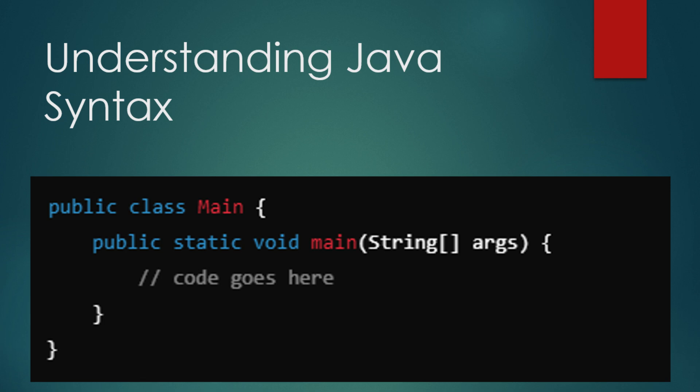In this example, Main is the class name, and within this class, we have the main method. The main method is where every Java program starts executing. It is always written as public static void main(String[] args). The public keyword means the method can be accessed from outside the class. Static means it belongs to the class rather than an instance. Void means the method doesn't return anything. The parameter String[] args is used to pass arguments from the command line. Everything inside the curly braces is part of the main method and that's where your code will live.